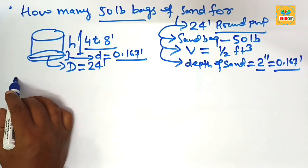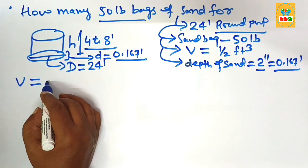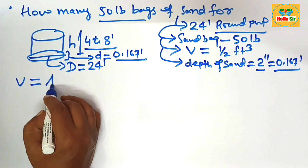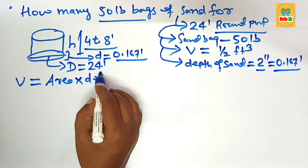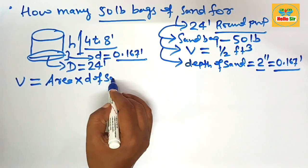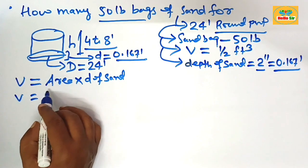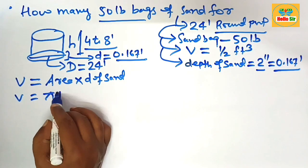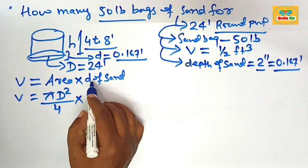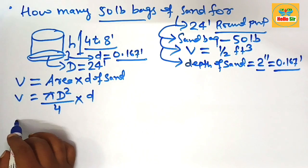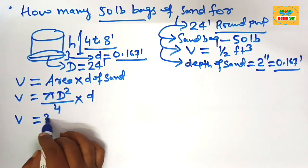To calculate the volume of sand required, the formula is: volume = area of round pool multiplied by the depth of sand. The area of a round pool uses the formula: pi times d squared divided by 4. This value is then multiplied by the depth of sand.